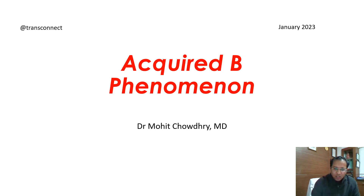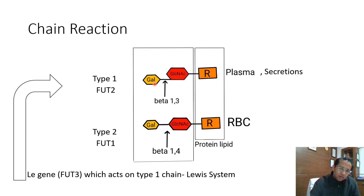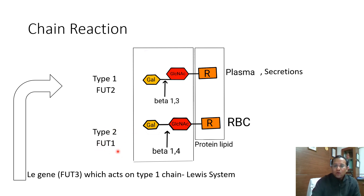Before that, there is something we need to know about the chains that are important in the ABO system — I call it the chain reaction. There are type 1 and type 2 chains. Type 1 chains have a beta 1-3 linkage between the terminal sugar galactose and the N-acetyl glucosamine. They are mostly found in the plasma and secretions, whereas type 2 chains are found on the RBC. On the type 2 chain, the FUT1 enzyme acts and causes the addition of a fucose sugar, turning it into an H substance.